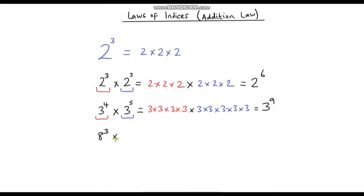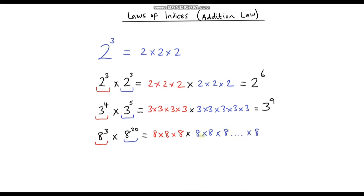Let's do one more: 8 to the power 3 multiplied by 8 to the power 20. 8 to the power 3 is 8 times 8 times 8. I'm not going to write out 8 times 8 twenty times, so I'll write 8 times 8 times 8 and put some dots. We're multiplying by 8 twenty times, so in total we have 3 plus 20, which gives us 23. So the answer is 8 to the power 23.